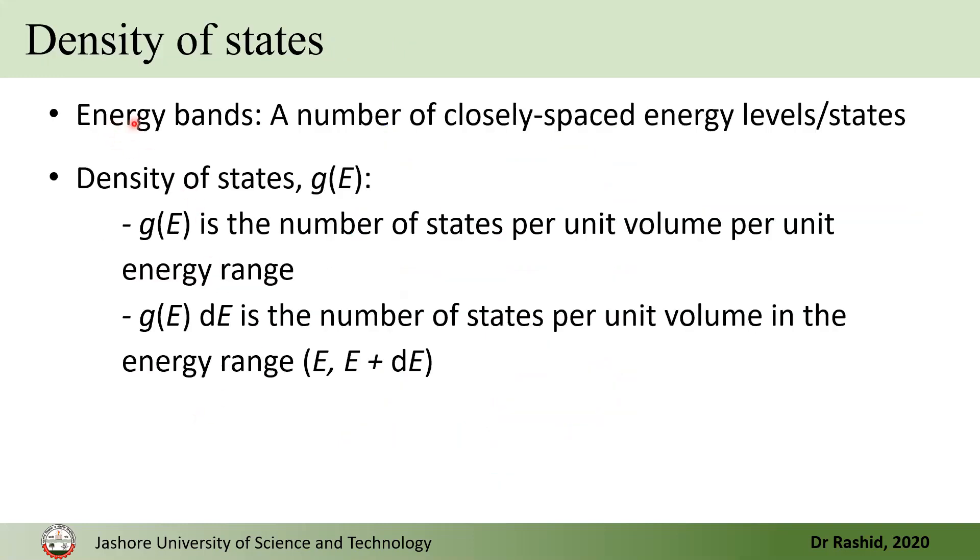So, the energy band has a number of closely spaced energy levels or energy states. Then, we call Z of E as the density of a state, which gives us the number of states per unit volume per unit energy range.